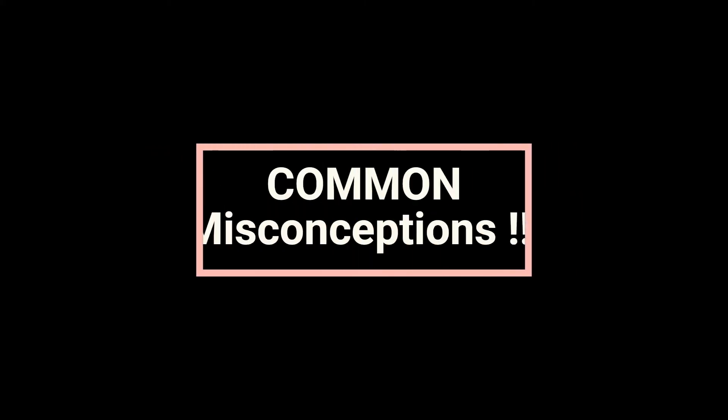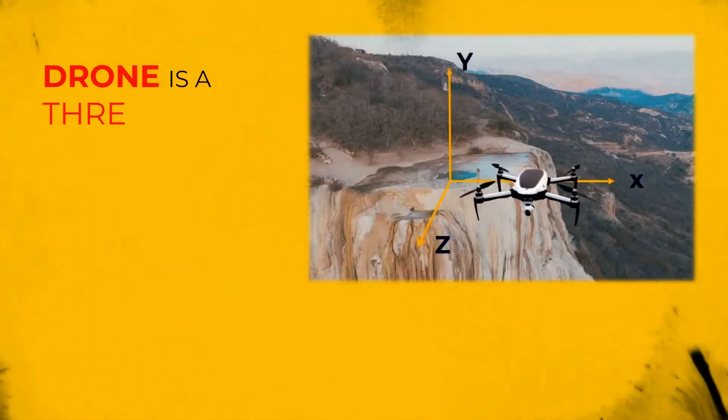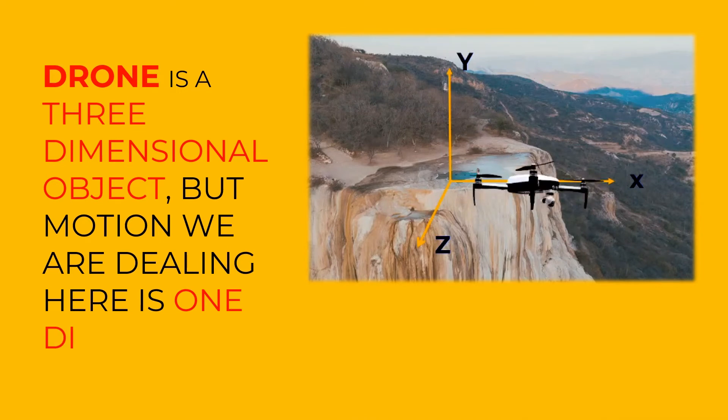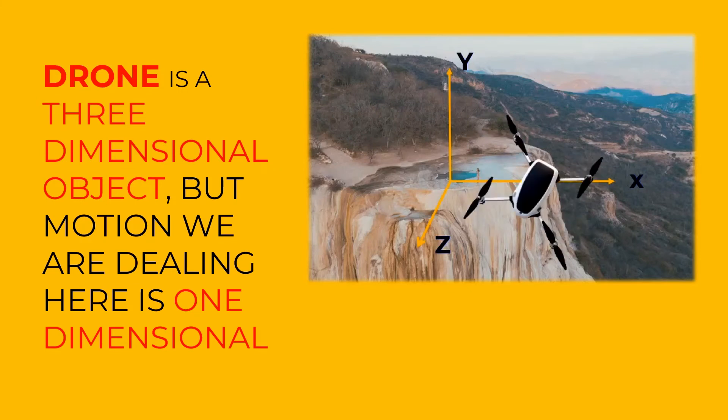Common misconceptions: The objects taken in all these examples are three-dimensional objects, but all of them are following one-dimensional motion. The drone itself is a three-dimensional object, but the motion of the drone is one-dimensional motion. The objects in all these cases are not one-dimensional.